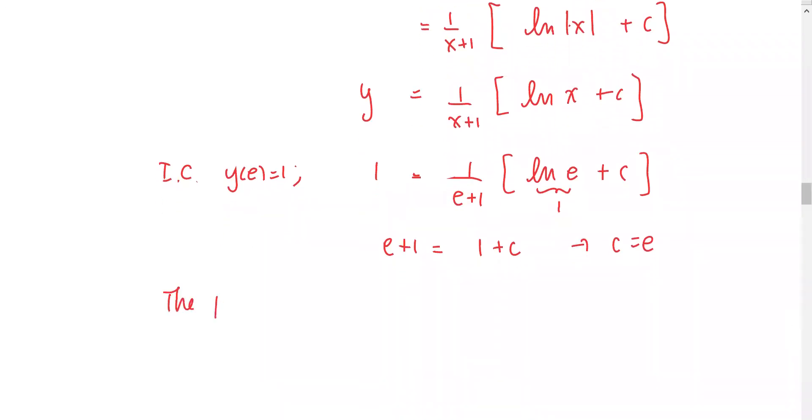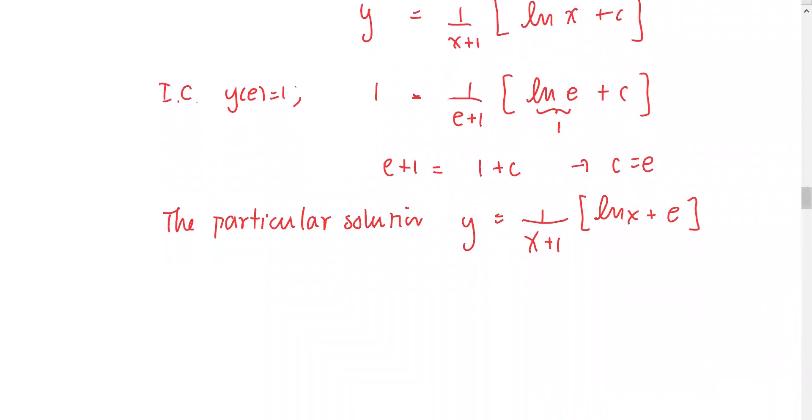That means the particular solution is y equals 1/(x+1) times (ln(x) + e), or y equals ln(x)/(x+1) + e/(x+1).